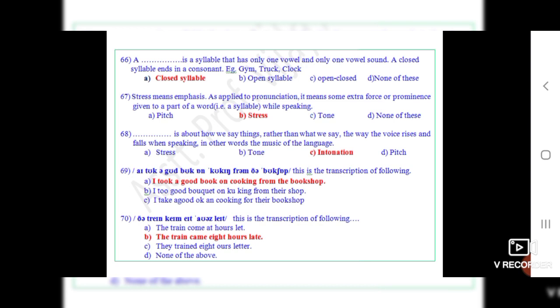Question 66: A dot dot is a syllable that has only one vowel and only one vowel sound. A closed syllable ends in a consonant. For example, zim, trap, clock. The correct option is A, closed syllable.